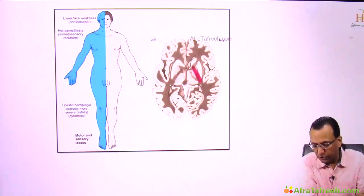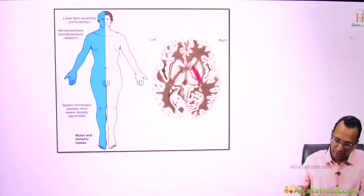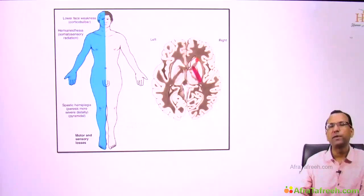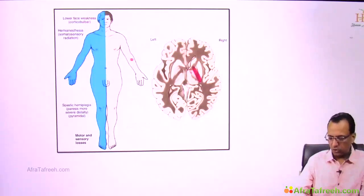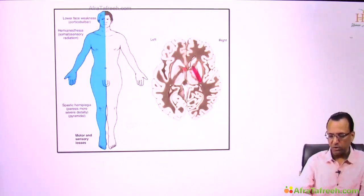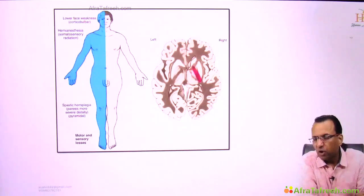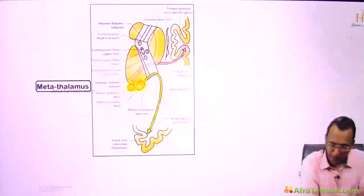If only the genu is involved, then the body is spared. Ischemia in the genu of the internal capsule will cause sensory motor loss on the opposite side of the face only, not the body, because the corticonuclear tract is compromised — face muscles and sensation will be affected.